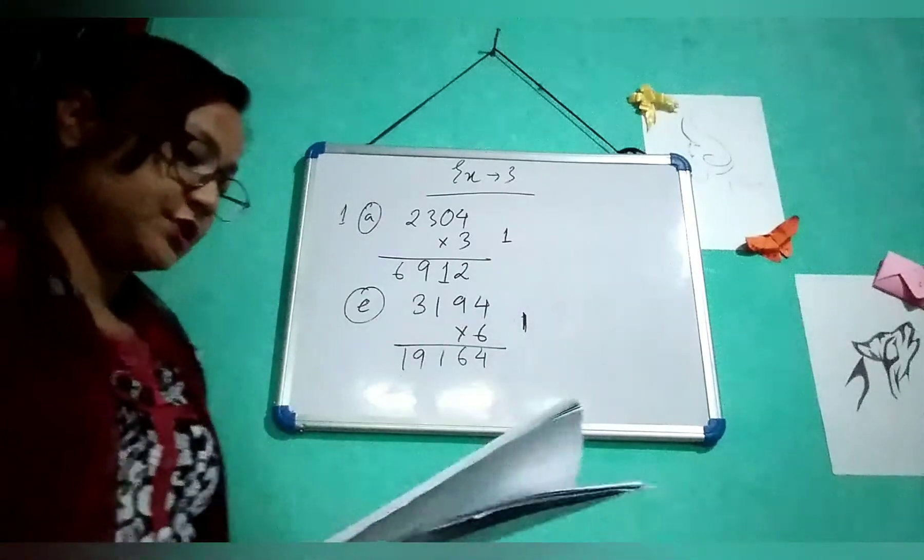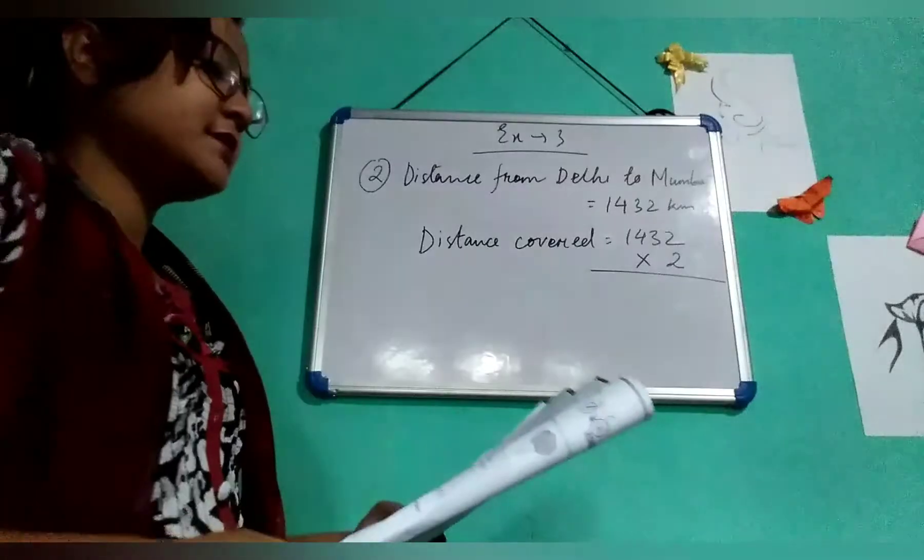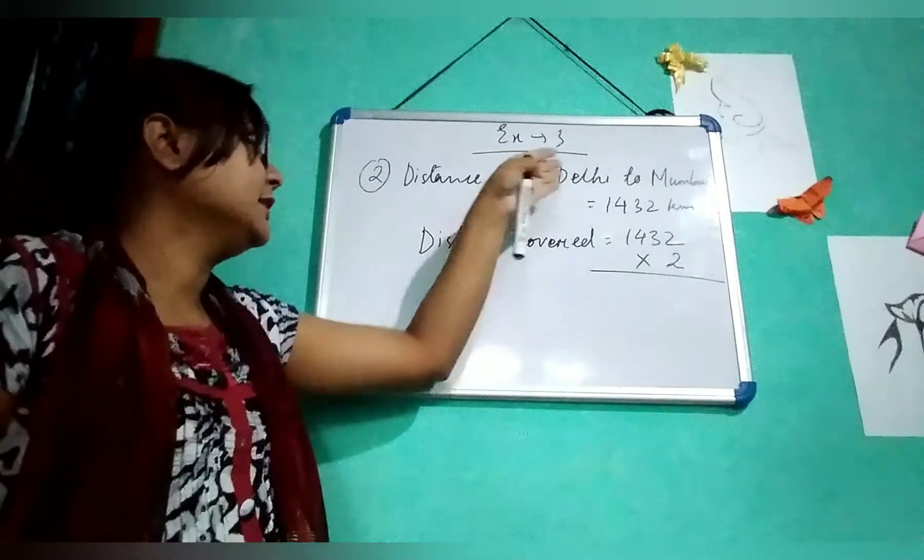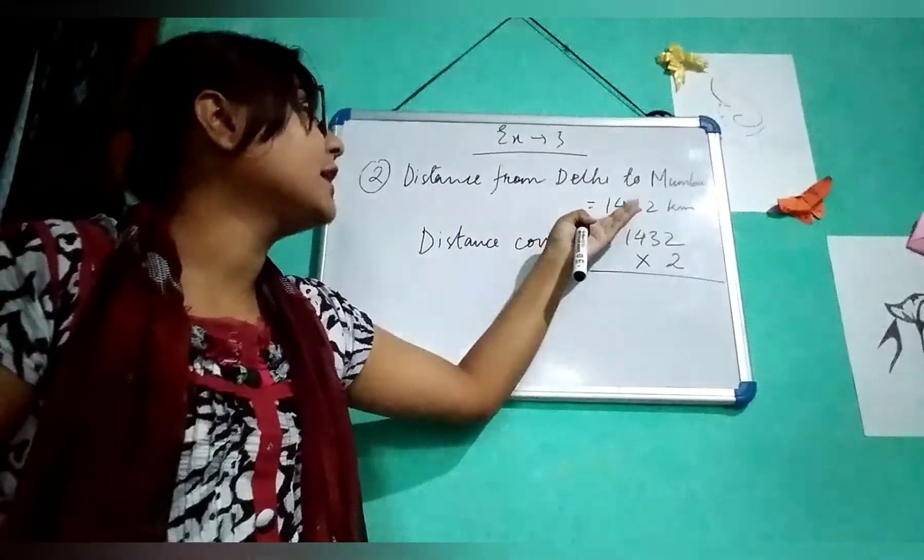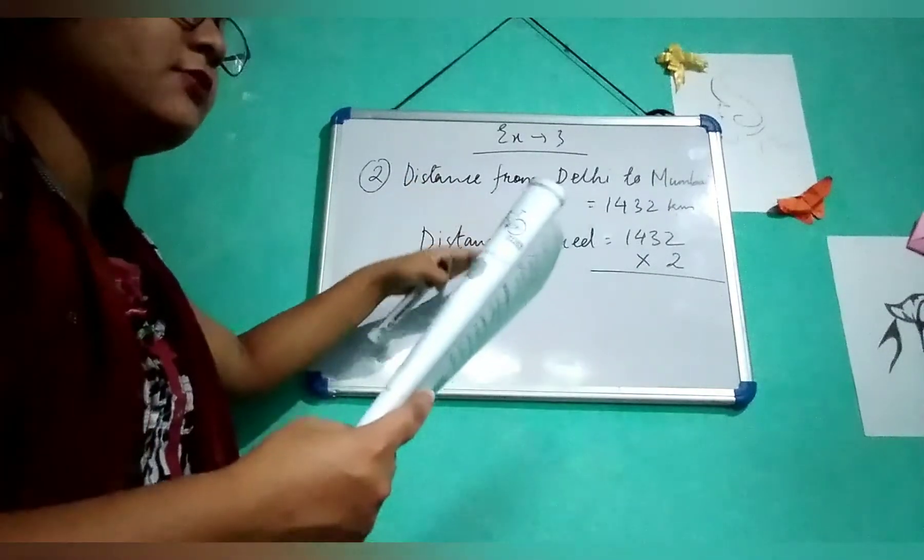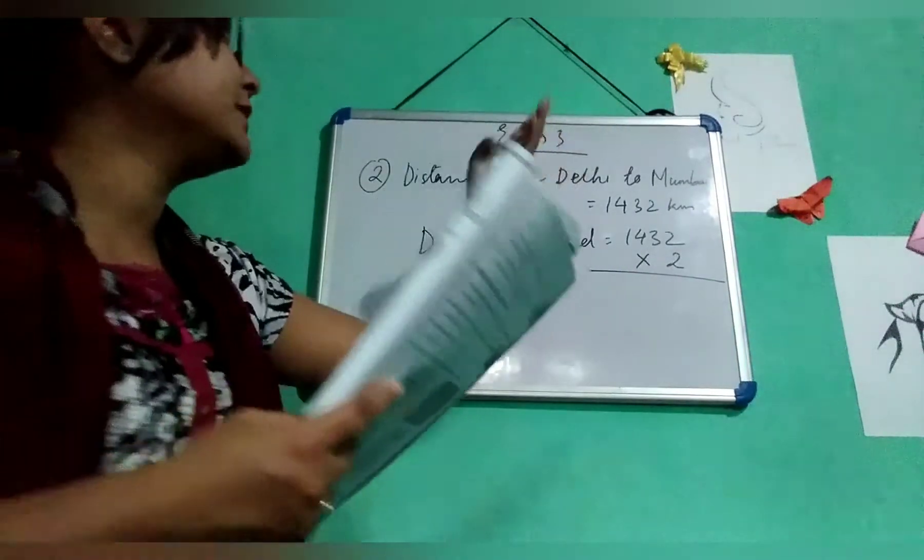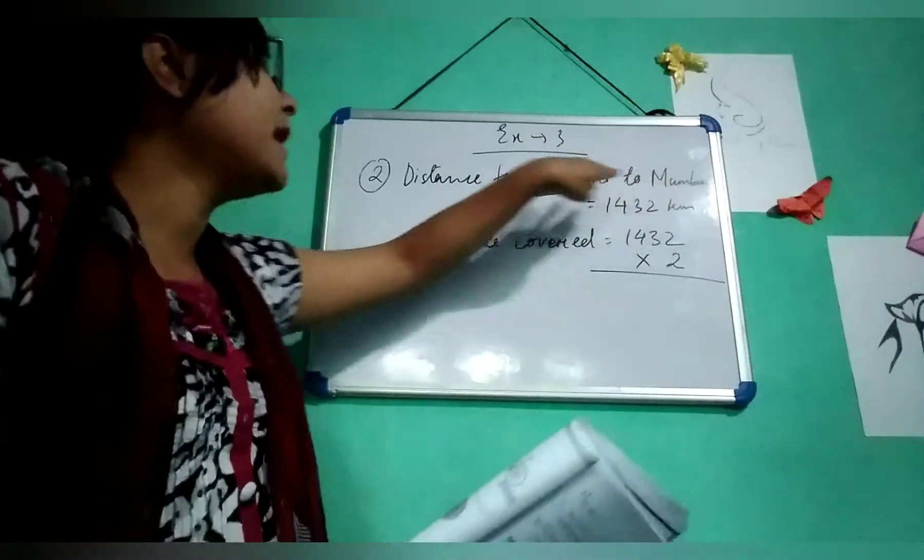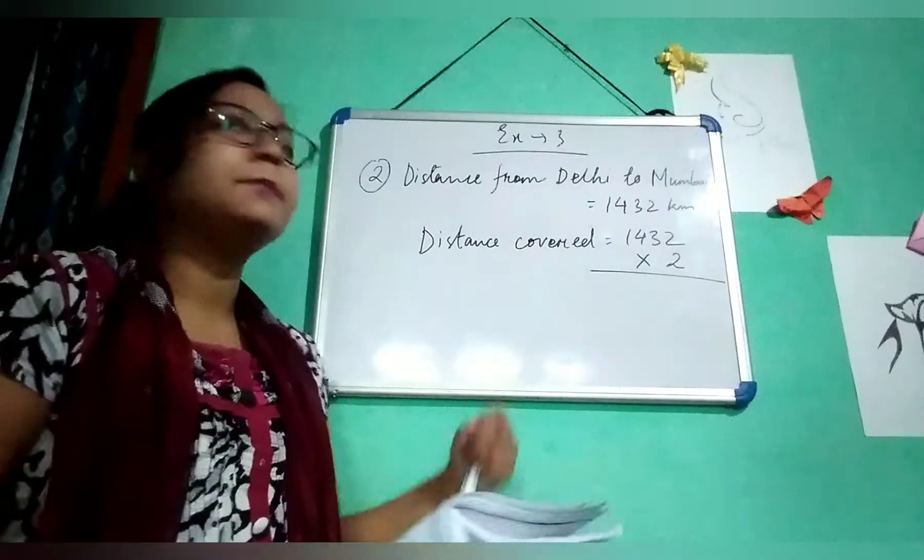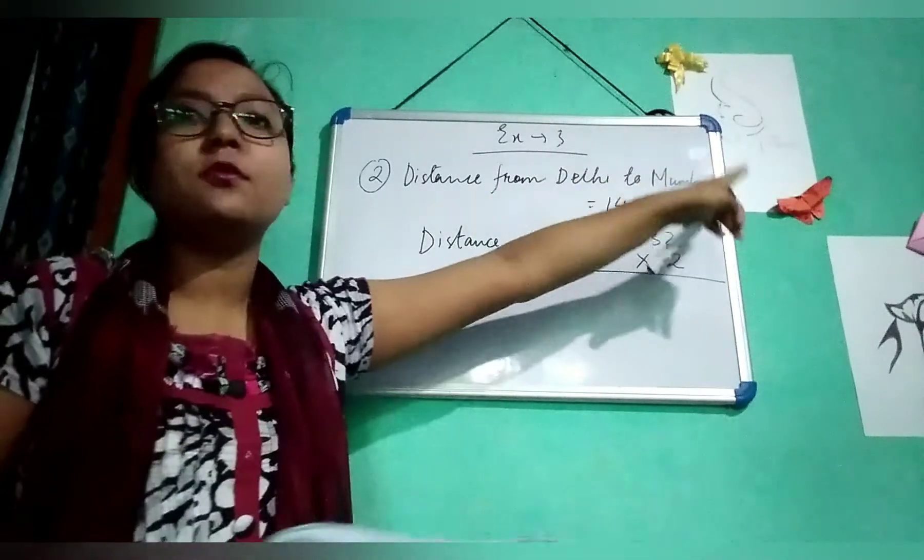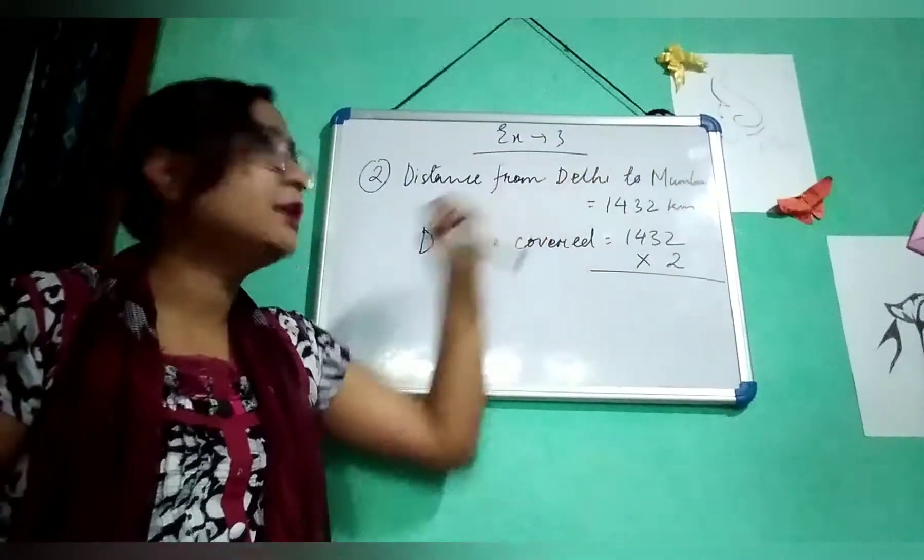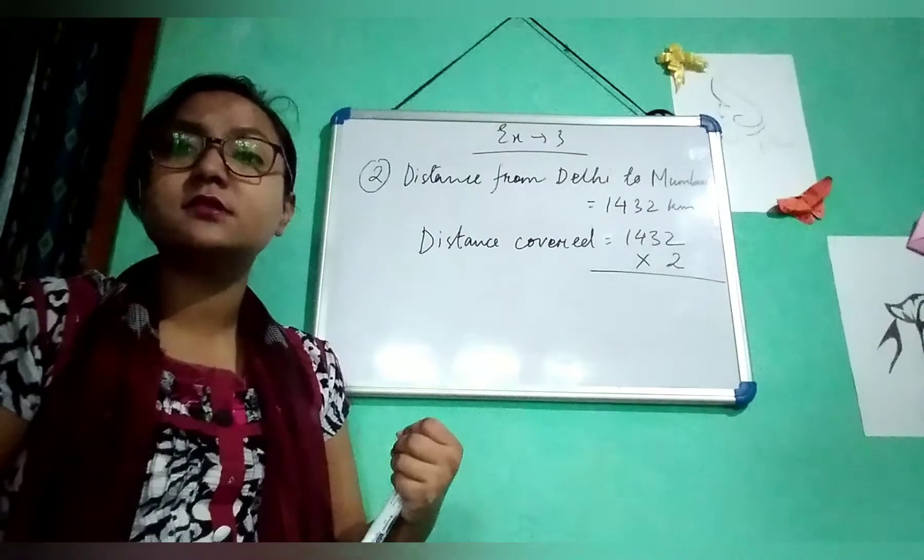Next question is a word problem. The distance from Delhi to Mumbai is 1,432 km. If I go from Delhi to Mumbai and again from Mumbai to Delhi, how much is the distance covered? Very simple. He went from Delhi to Mumbai, it will be 1,432. From Mumbai to Delhi will be the same, 1,432.